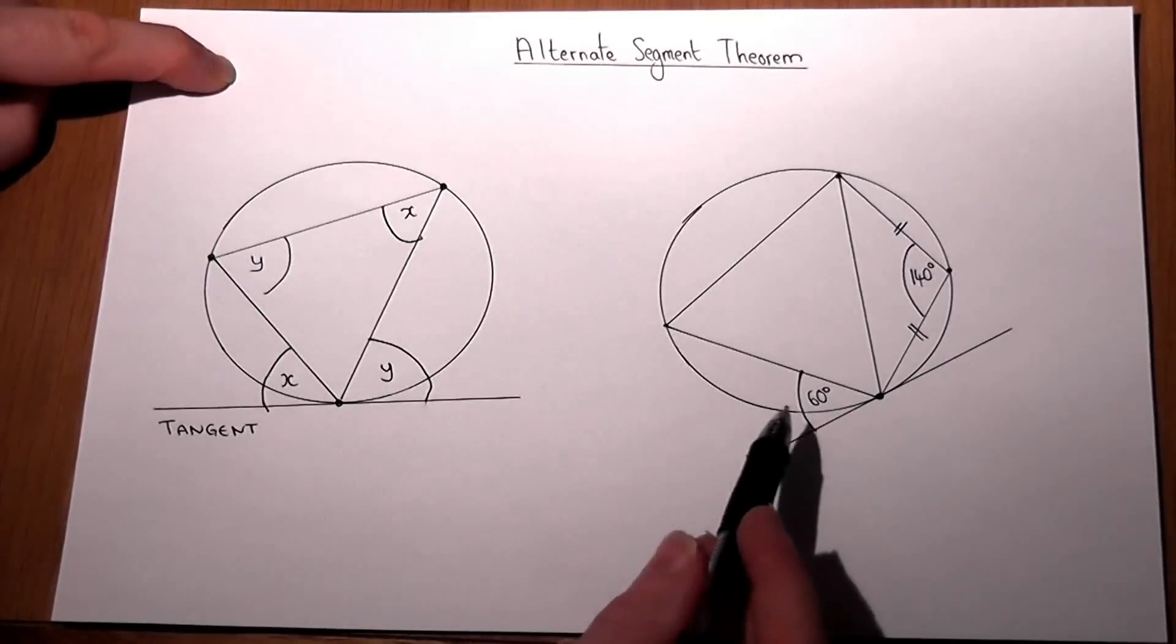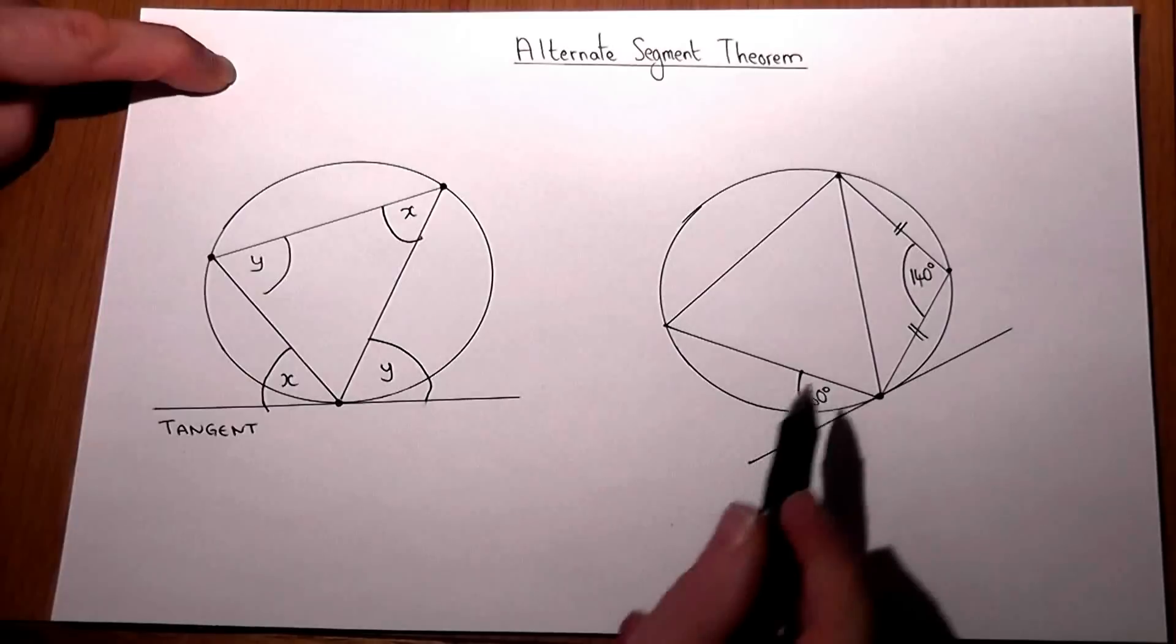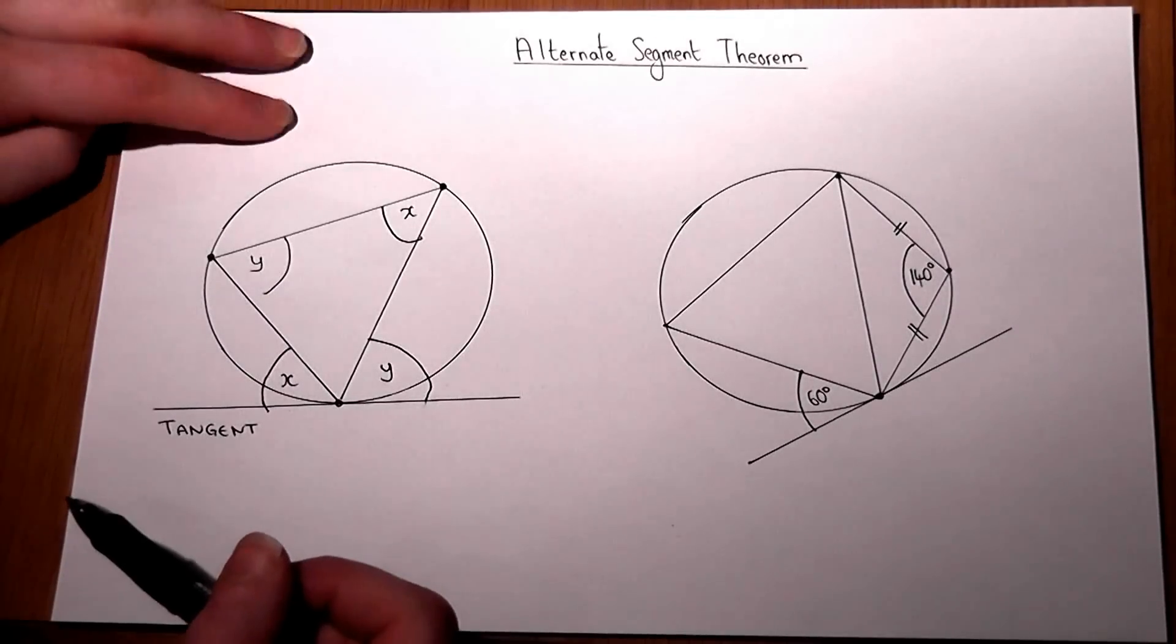And this problem just shows you an application of that. So what angles can we find in this shape? Well, actually quite a lot.